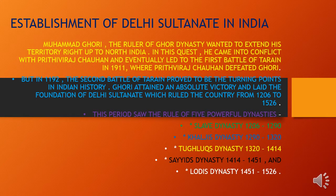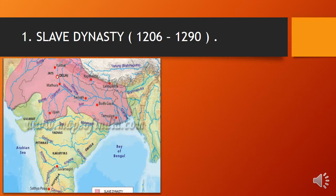We will see these five powerful dynasties one after another — who were the rulers and what administrations they carried on. To start with, the first one is the Slave dynasty. As you can see on the Indian map, all the purple-colored areas are the empires or kingdoms occupied during the Slave dynasty.